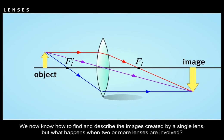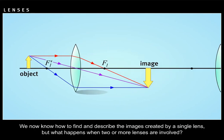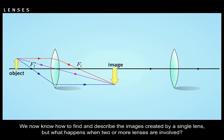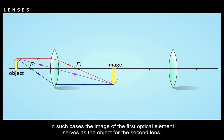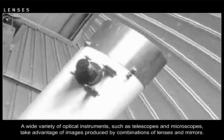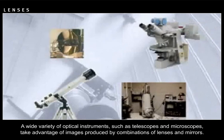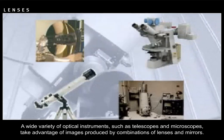We now know how to find and describe the images created by a single lens. But what happens when two or more lenses are involved? In such cases, the image of the first optical element serves as the object for the second lens. Notice that process produces an upright real image. A wide variety of optical instruments, such as telescopes and microscopes, take advantage of images produced by the combinations of lenses and mirrors.